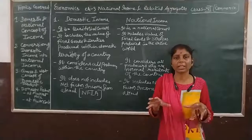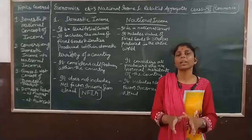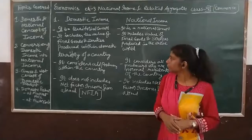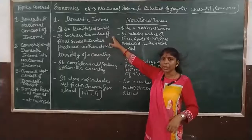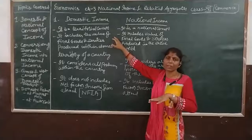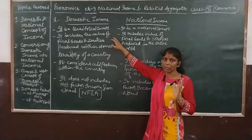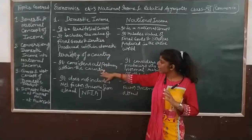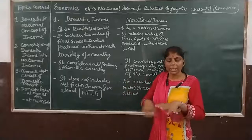If the domestic territory is under production of final goods and services, then it is said to be domestic product or domestic income. So it is a territorial concept — within the domestic territory, whoever is producing the final goods and services, it is taken into the domestic income. It considers all producers within the country.